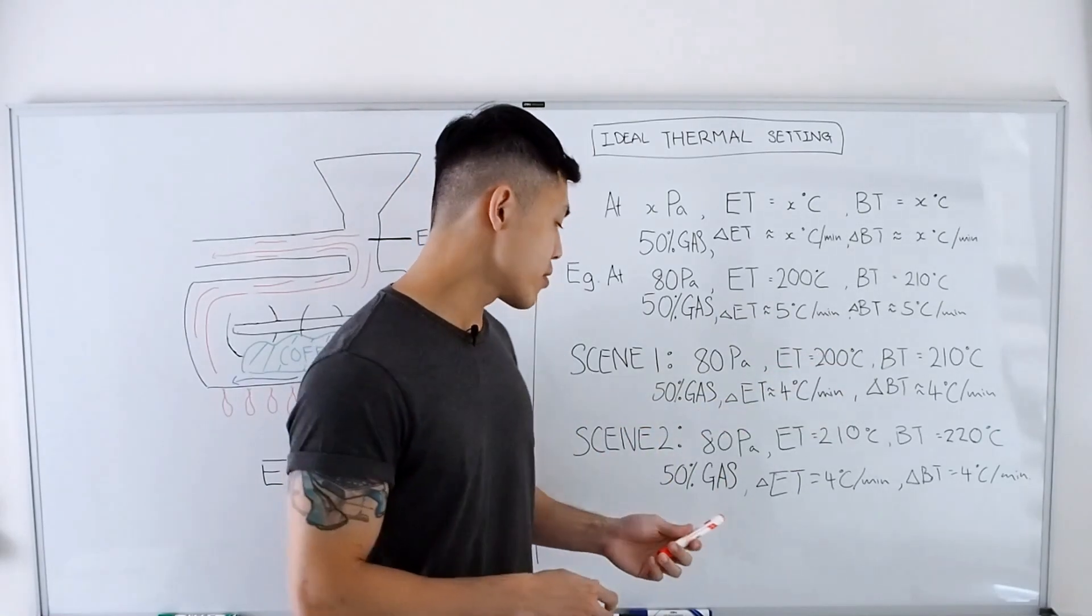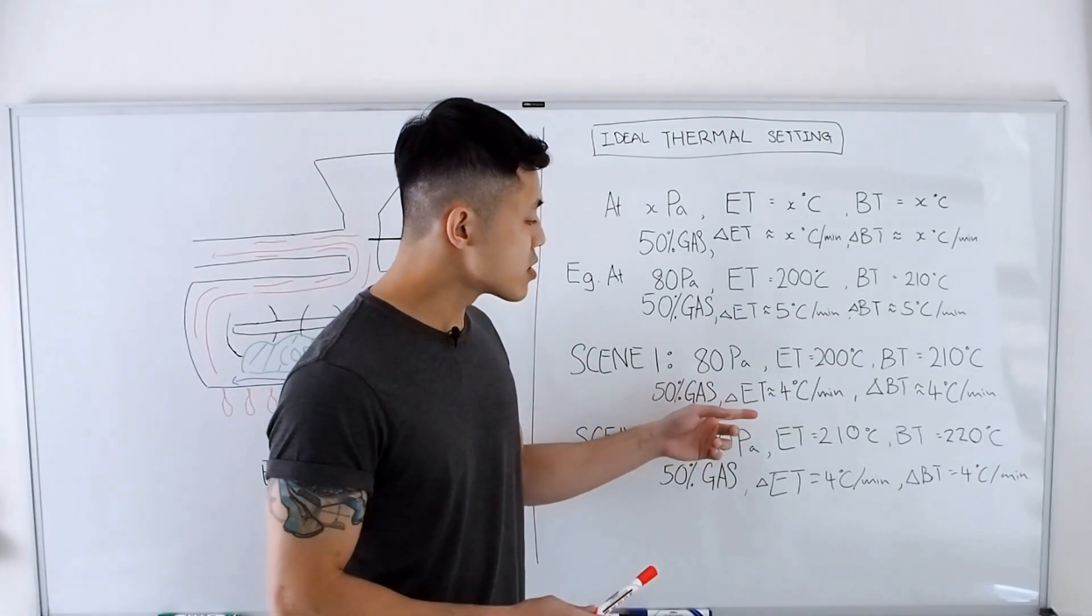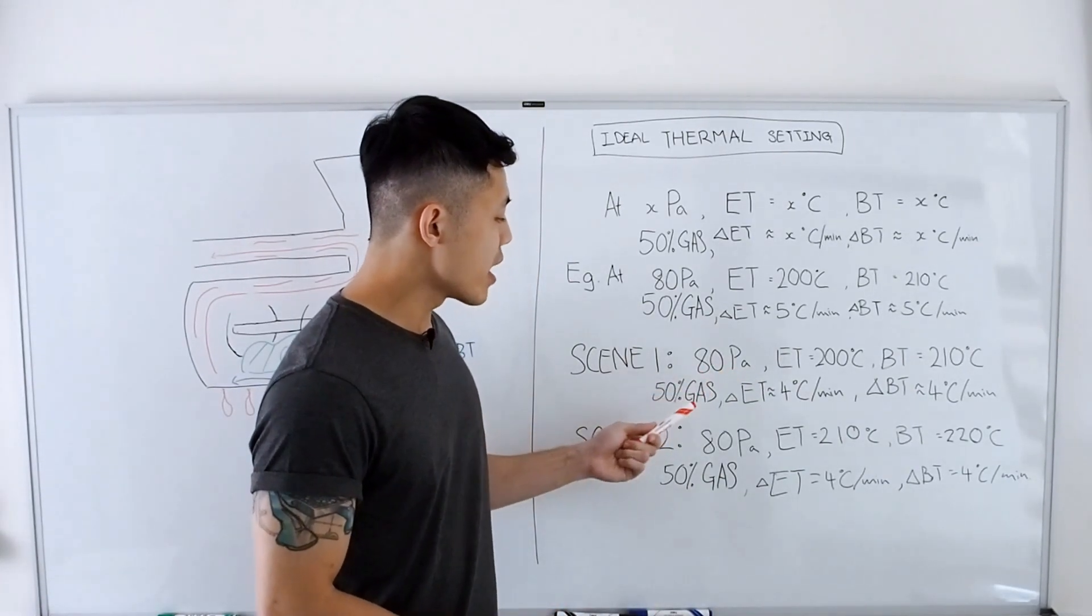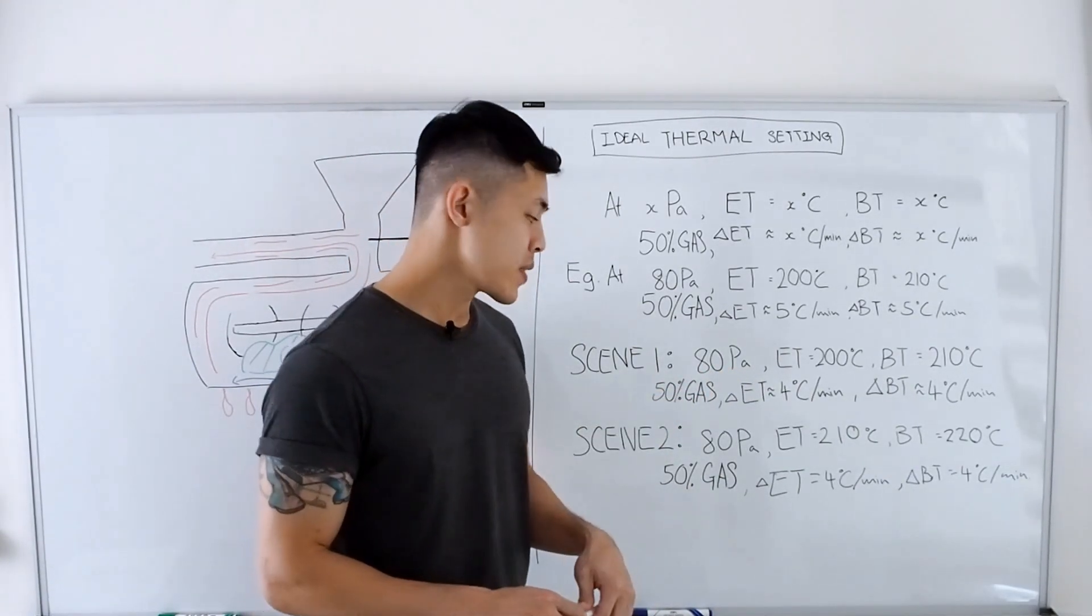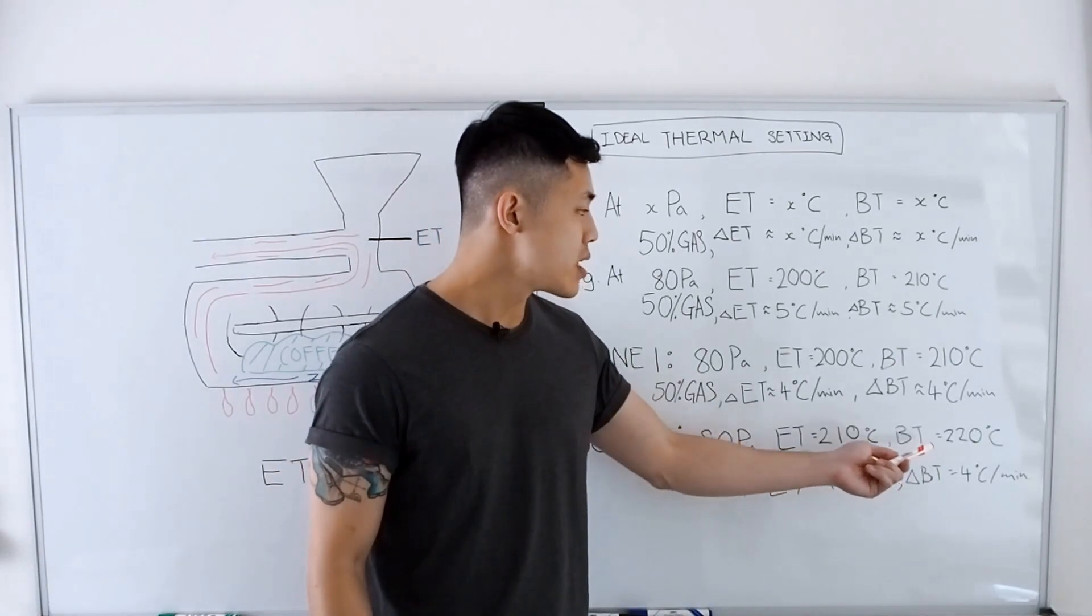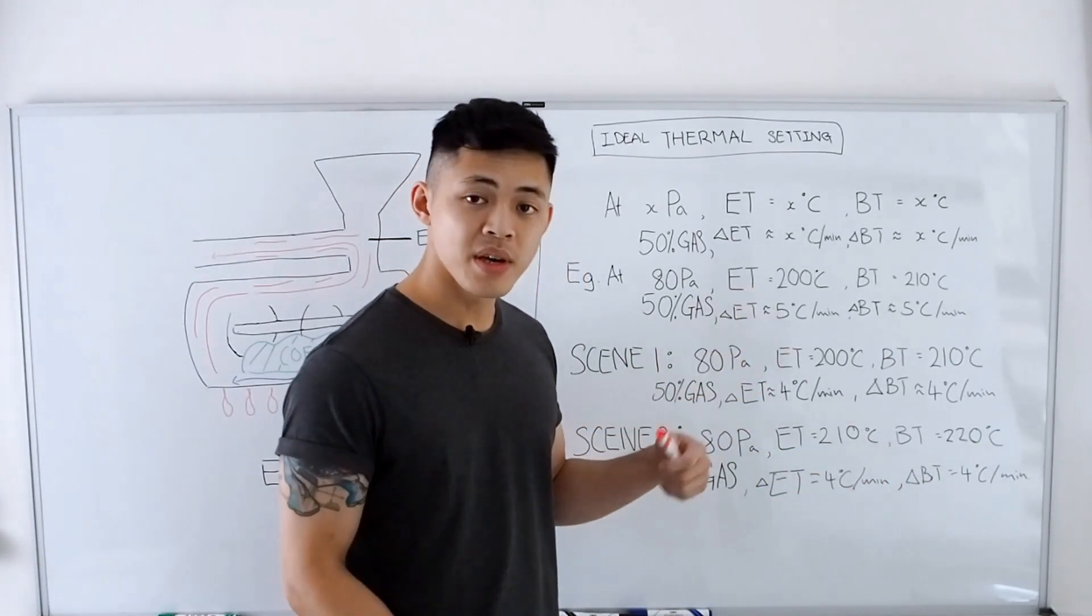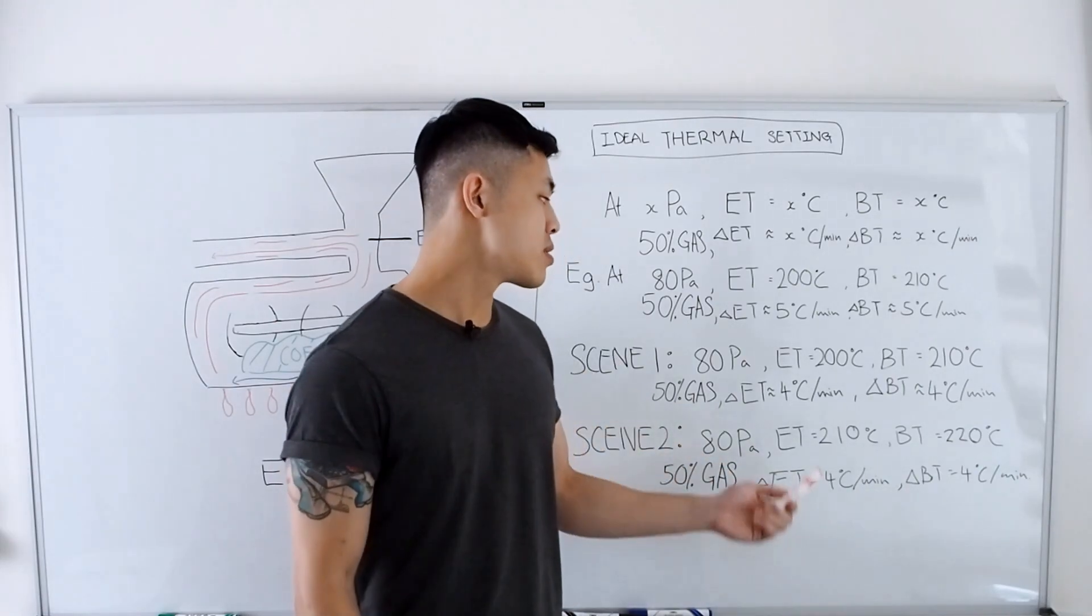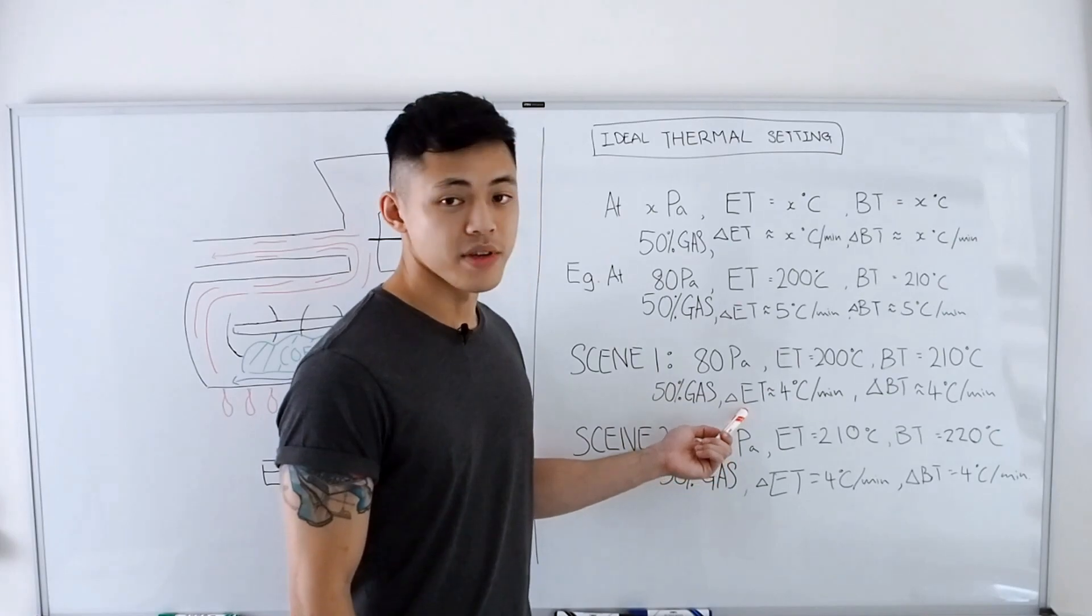Now let's go to scenario number two. After we continue heating up the roaster at this airflow and this gas setting, we might find that the ET and BT is higher than our ideal thermal setting, and our delta ET and delta BT is still lower than over here.